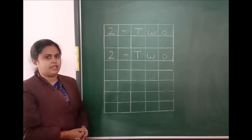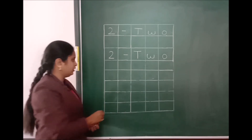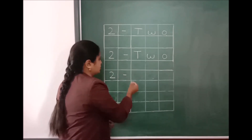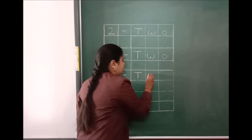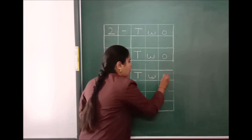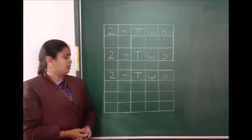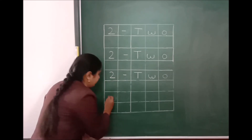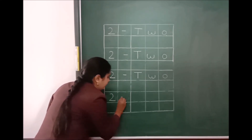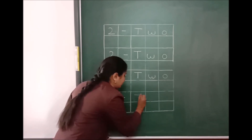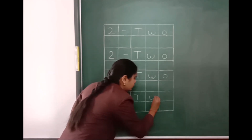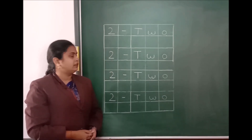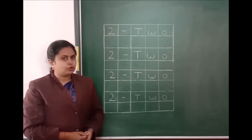Now leave one box. Once again write. Children, you also write with me. Write number 2, then dash, T, W, O — two. Once again: leave one box, write number 2, dash, T, W, O — two. So children, this is the spelling of 2.